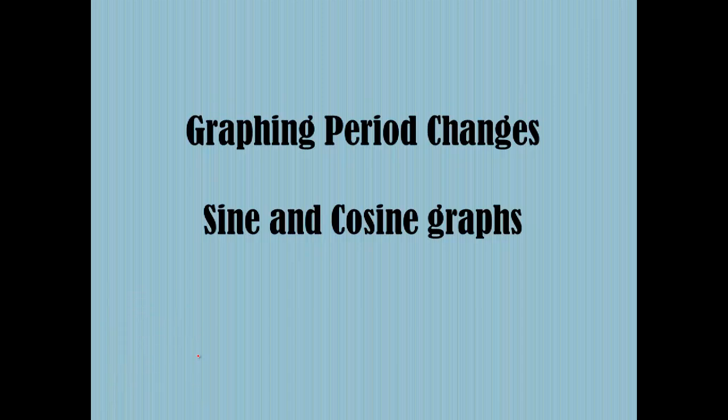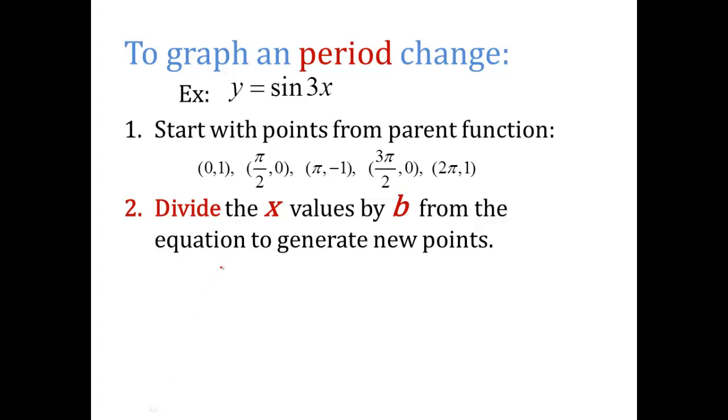This video is about how to graph period changes on a sine and cosine graph. To graph a period, let's think first, what is a period? A period is the time it takes, here's my graph, the time it takes to complete one cycle of the graph, whether it's sine or whether it's a cosine graph. How long does it take to complete this cycle before it starts repeating?